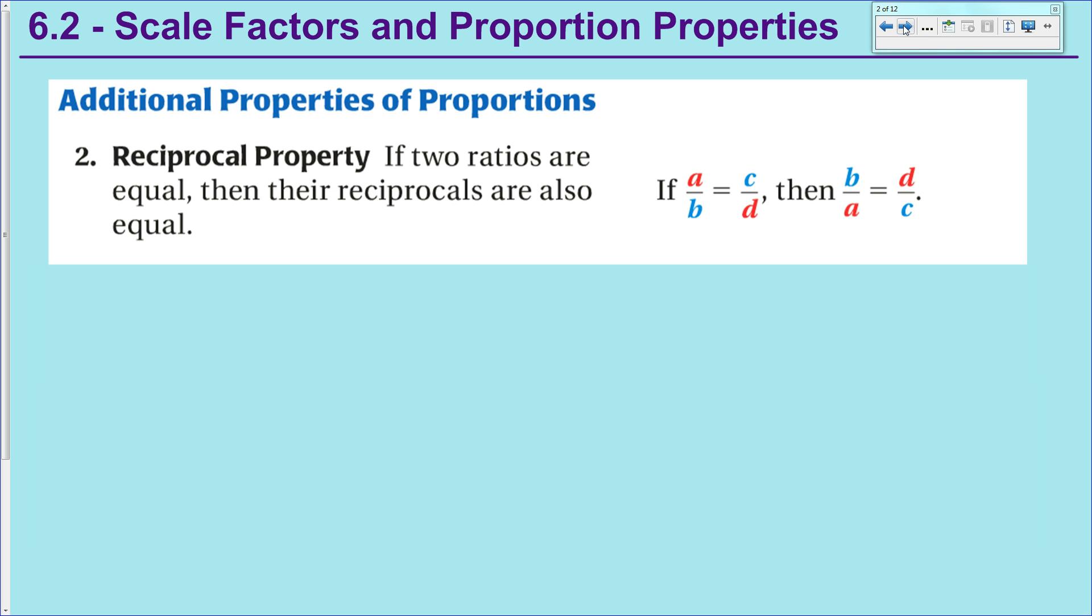The first thing I want to talk about is a couple properties of proportions. These things you're just going to need to know straight up to answer a couple questions. The first one is the reciprocal property, which says that if we take a proportion and flip one side of it, then we must also flip the other side. So you see over here it used to be A over B, and it changed to B over A. So therefore I also need to switch it to D over C.